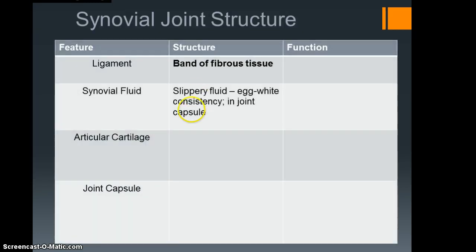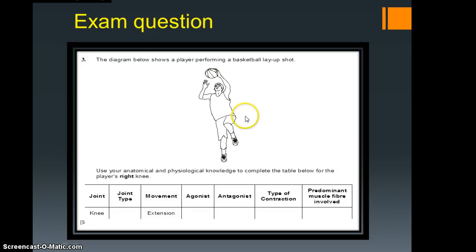What I'd like you to do is pause the screencast and have a go at this small table here. You've got the features: ligaments, synovial, articular cartilage, and joint capsule. Write in what the structure of them is and then what you think the function is. Pause the screencast there and have a go. Okay, welcome back. Hopefully you've managed to fill that out. I'm not going to give the answers to that, but we will look at that in the session.